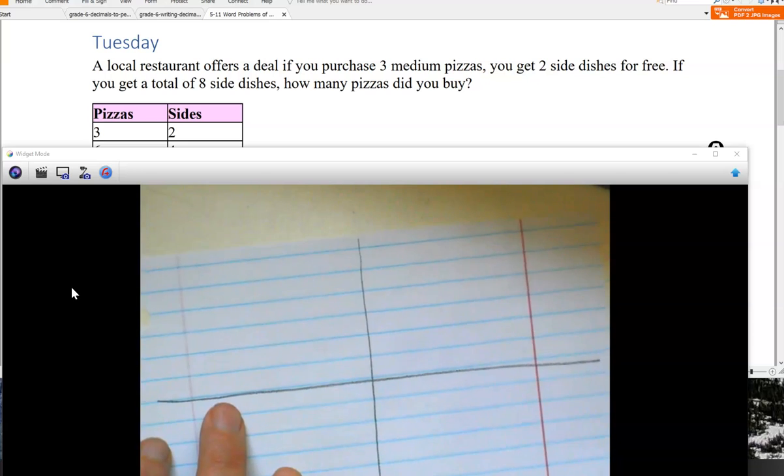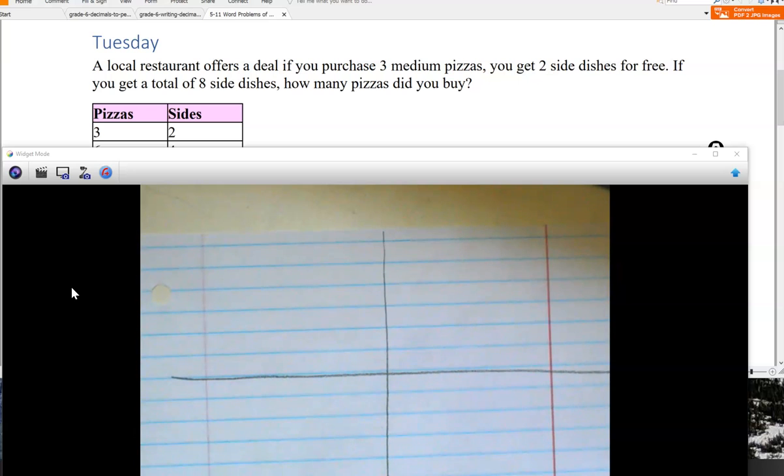Got my paper ready to go, we'll go ahead and delve into this one. Let's first take a look at the actual word problem itself. We're going to read it first and then I'll put together an answer sentence. A local restaurant offers a deal if you purchase three medium pizzas, you get two side dishes for free. If you get a total of eight side dishes, how many pizzas did you buy?